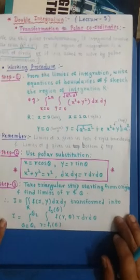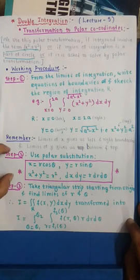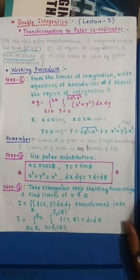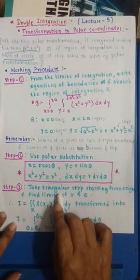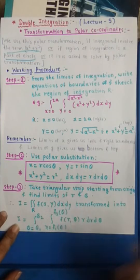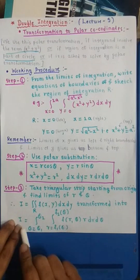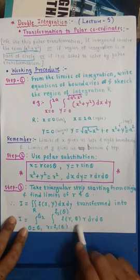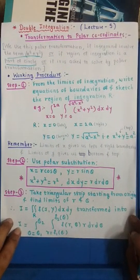In step three, after drawing the sketch of the region and applying polar substitution, we take a triangular strip. In Cartesian integrations we used vertical or horizontal strips, but in polar form we use a triangular strip starting from and fixed at the origin. Along this triangular strip we find limits of r and θ, so that our integration I equals the double integral of f(x,y) dx dy, transformed into the form where θ varies from θ₁ to θ₂, r varies from f₁(θ) to f₂(θ), with dx dy replaced by r dr dθ.